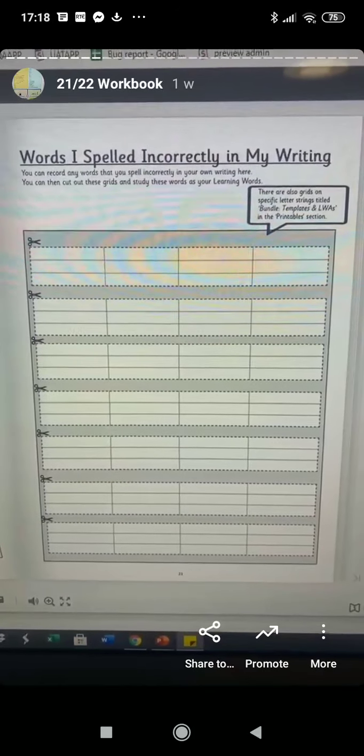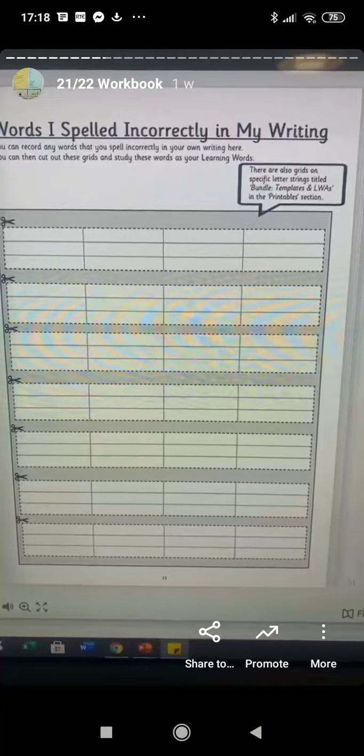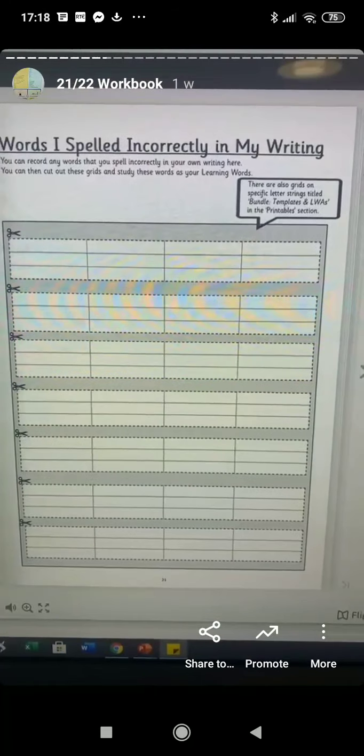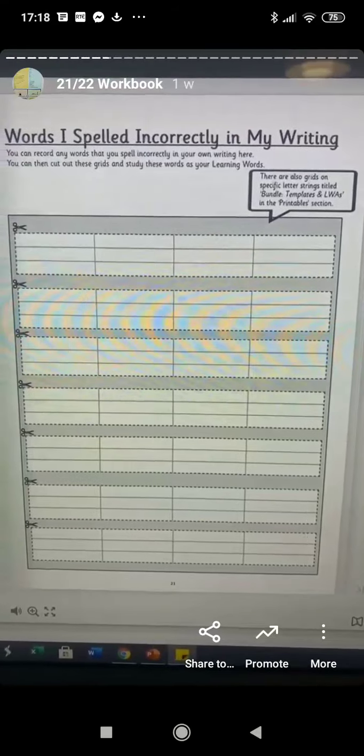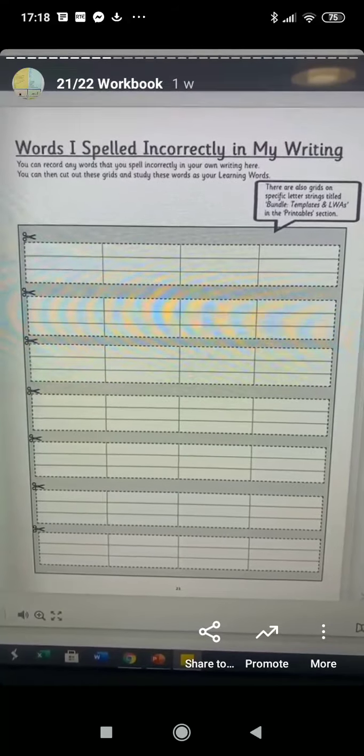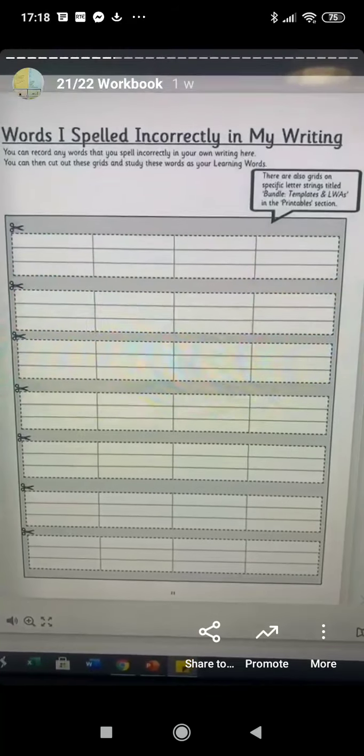And so this section is words I spelled incorrectly in my writing. And I really like this section. So whenever you correct children's spellings in their writing, they often don't look at it or don't do anything with that information. So here we would encourage the children to record the words that they've spelled wrong in the writing that their teacher has corrected.